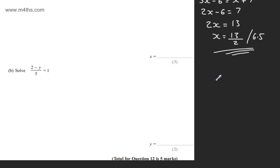In part B for two marks, we're asked to solve (2-y)/5 = 1. So (2-y)/5 = 1. I'm going to multiply both sides of the equation by 5, and that will give me 2 - y = 5. I'm going to add y